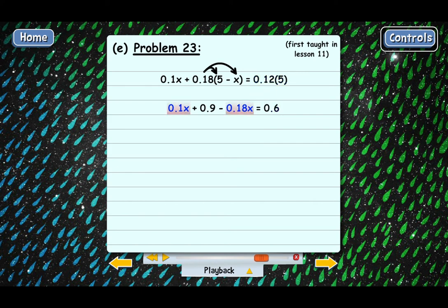So now we can combine these X terms. This is really a negative 0.18X. Let me change that. And so 0.1 plus negative 0.18 is negative 0.08. And so these combined equal negative 0.08X.